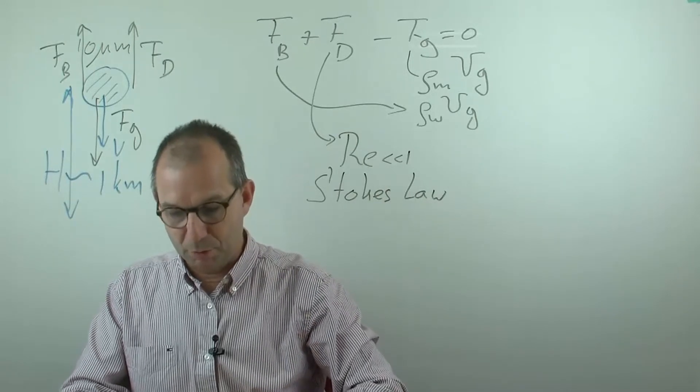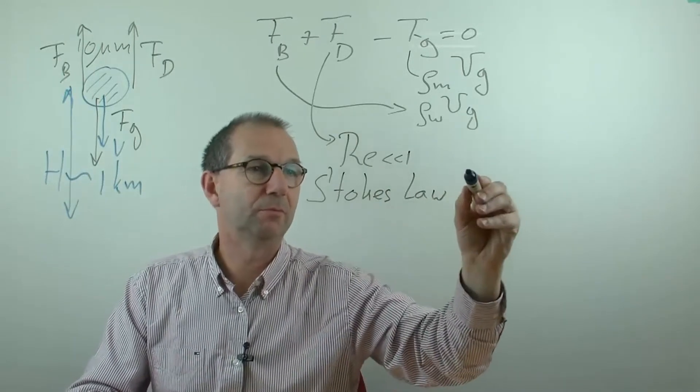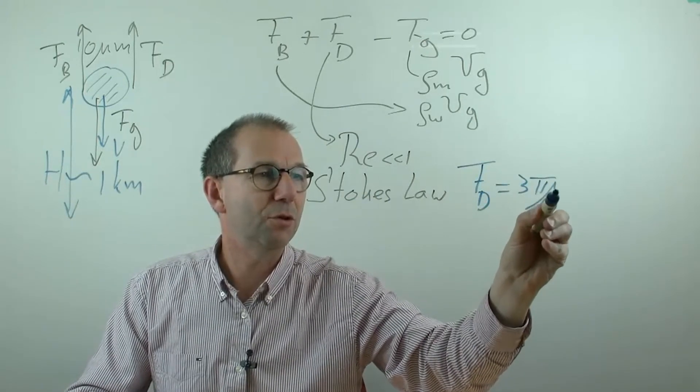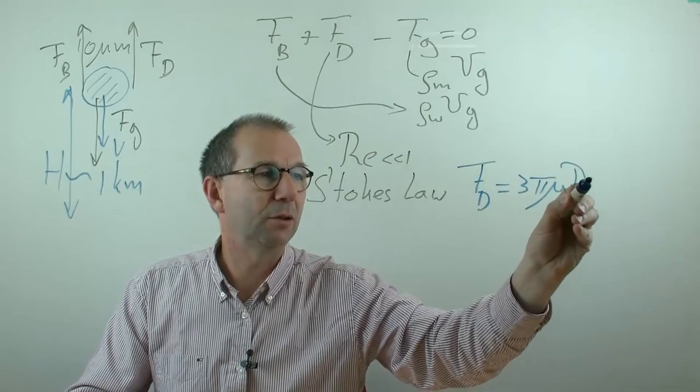So let me write that in blue, because this is a special case. F drag in that case is 3π times viscosity of water, times diameter of particle, times terminal velocity.